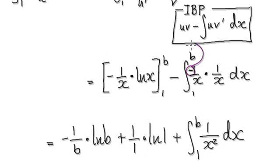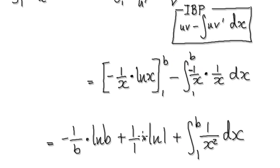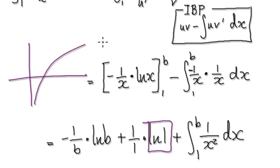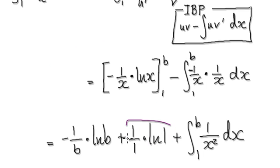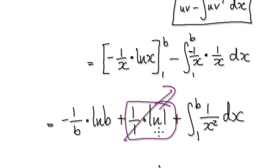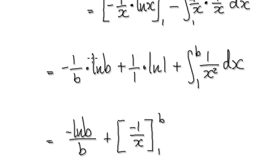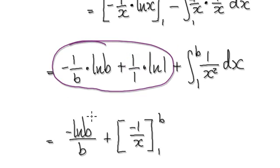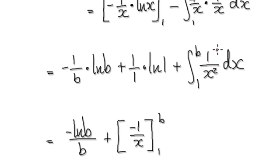The negative here is a constant, so take it out — that gives you a positive. Looking at this, the natural log of 1: since ln(1) = 0, this whole term disappears. Tidying up gives you this, and integrating that gives you this.